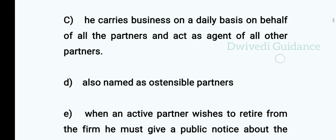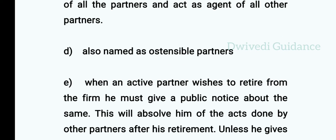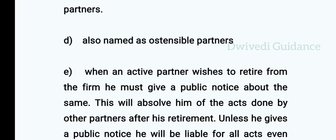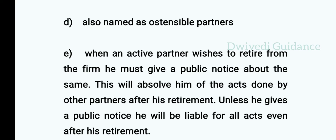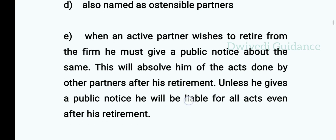Active partners are also called ostensible partners. When an active partner wishes to retire from the firm, he must give a public notice about the same. This will absolve him of acts done by other partners after his retirement. Unless he gives a public notice, he will be liable for all acts even after his retirement.